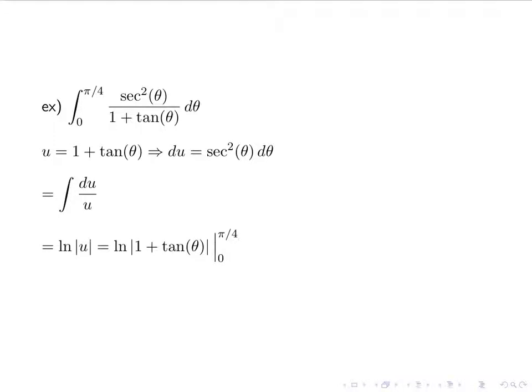Evaluating from 0 to pi over 4: plugging in pi over 4, tangent of pi over 4 is 1, so ln of (1 plus 1), which is ln of 2. Plugging in 0, tangent of 0 is 0, so 1 plus 0 is 1, giving ln of 1. So we have ln of 2 minus ln of 1. But ln of 1 is 0, so the answer is just ln of 2. Do not plug it into your calculator for an approximation — we want the exact answer: ln of 2, done, no calculator needed.